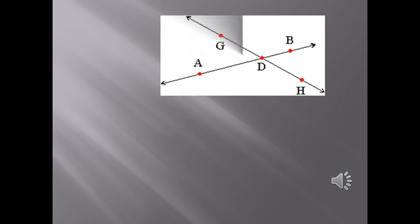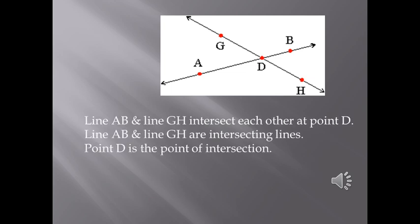In the previous figure, we had lines with only single alphabet used in their labellings. Let us look at now lines which are named using two alphabets. In the given figure, line AB and line GH intersect each other at point D. So line AB and line GH are intersecting lines and point D is their point of intersection.